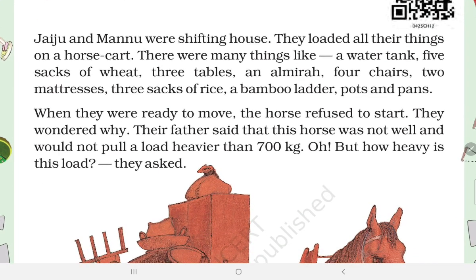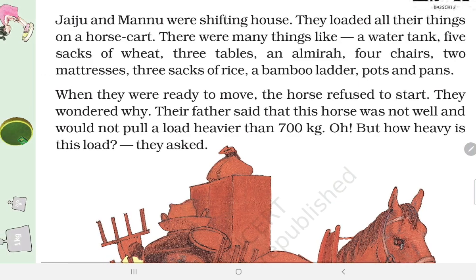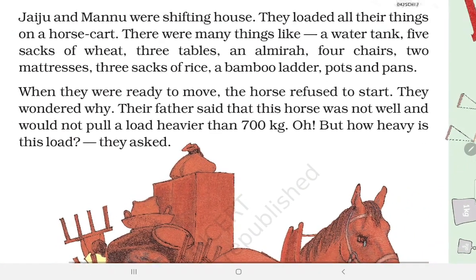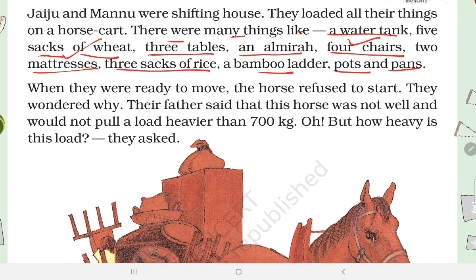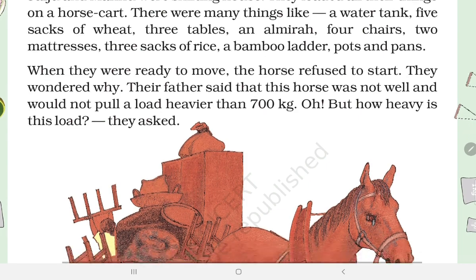Chapter 12: How Heavy, How Light. Jiaju and Manu were shifting house. They loaded all their things on the horse cart. There were many things like a water tank, five sacks of wheat, three tables, an almira, four chairs, two mattresses, three sacks of rice, a bamboo ladder, and pots and pans.